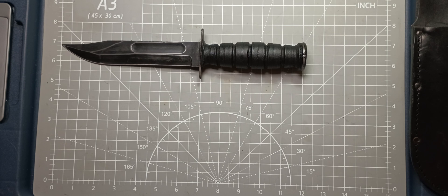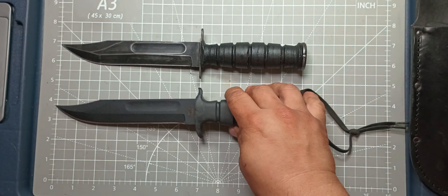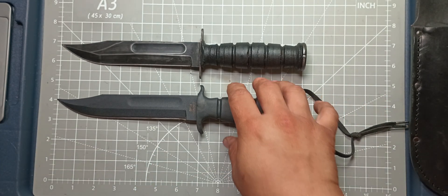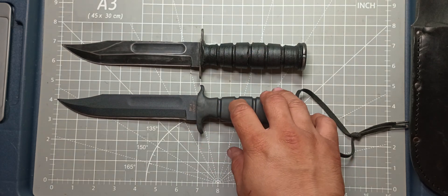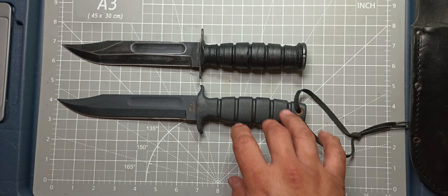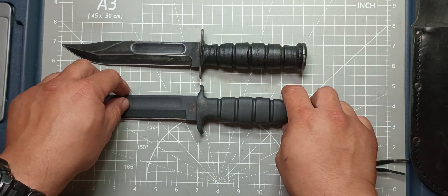And we have another knife right here to compare it to. His little brother. The Ontario SP1 combat being compared to his older brother, the combat. The 498 Marine combat knife.